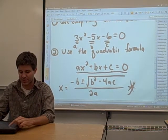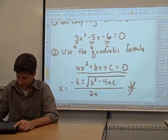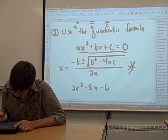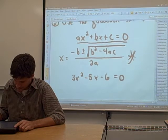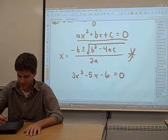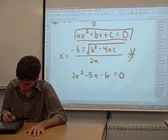We were working on this problem up here. 3x squared minus 5x minus 6 equals 0. So what we have here is a quadratic equation. In this case, if we can compare it to this general quadratic equation up here, we have A equals 3.